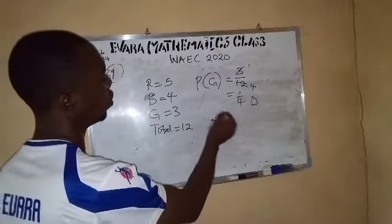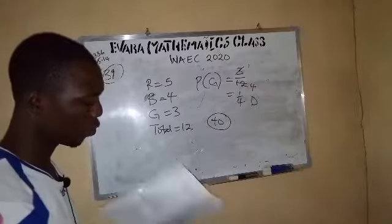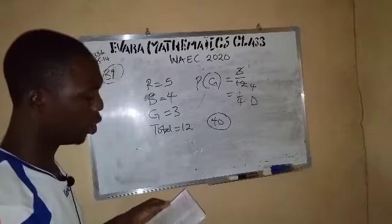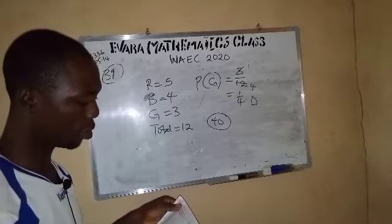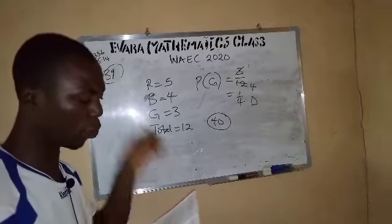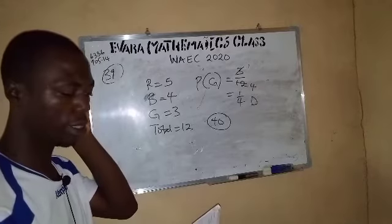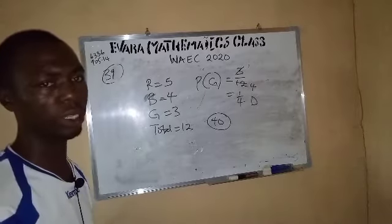Now question number 40. Question number 40 says, if two balls are picked or they are selected at random one after the other with replacement, what is the probability that both are red?